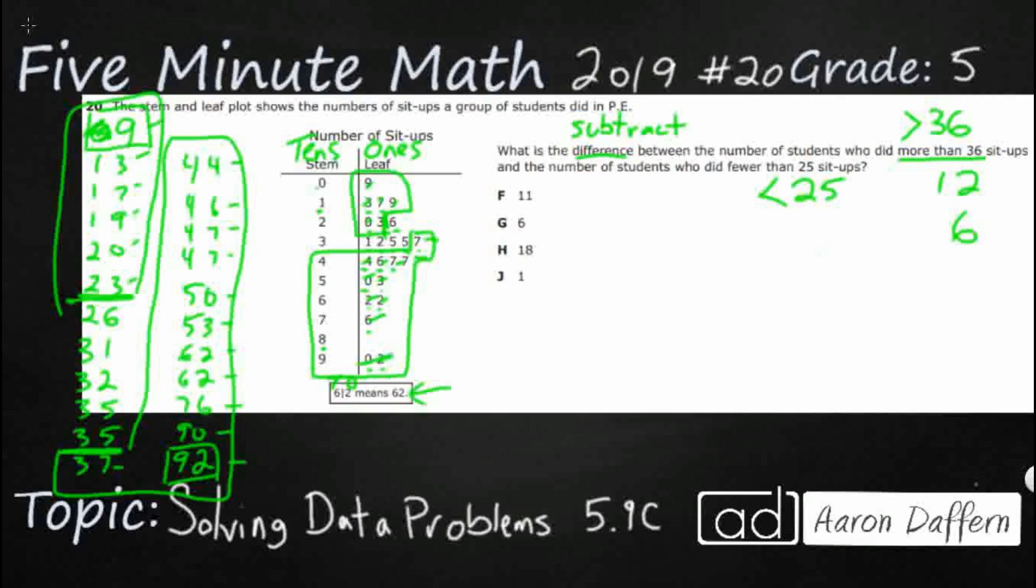So, all of that work to get 12 minus 6. And so, 12 minus 6. There we go. The difference between those two is going to be 6.